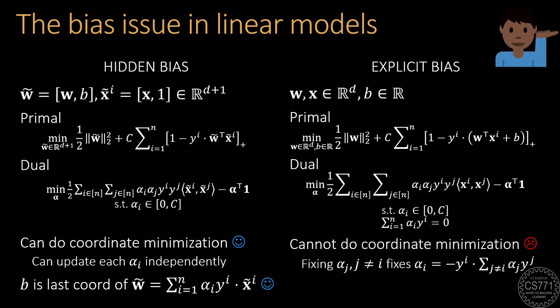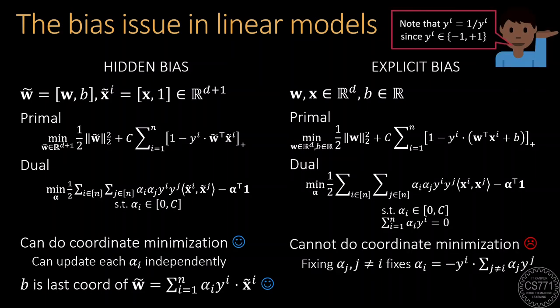This extra constraint prevents us from doing coordinate minimization since if we choose a variable alpha_i and fix all others, the additional constraint completely fixes the value of alpha_i, leaving no room for optimization.